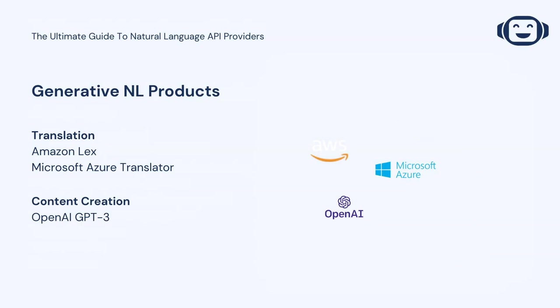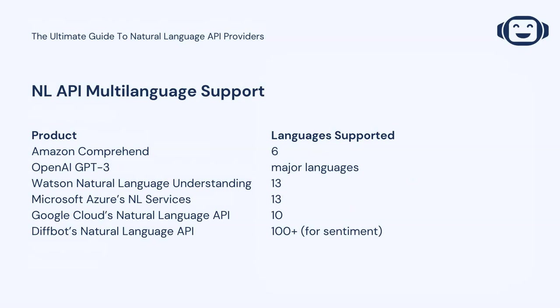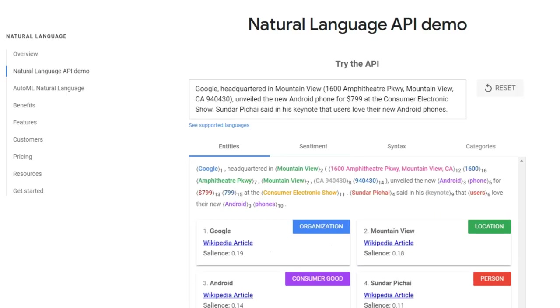To start off, I want to single out a few services for if you're looking for a creative NL API — that is, one that creates content, translates, or responds to prompts. Your options for right-out-of-the-box services include OpenAI's GPT-3, Amazon Lex, and Microsoft Azure Translator. Also of note: if you're trying to understand or structure data in a variety of languages but translation isn't your primary objective, then all of the options we're looking at today support most major languages. With this use case aside, we can dive into how all of these providers handle extracting meaning from and structuring natural language input.